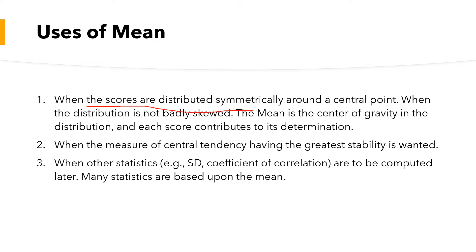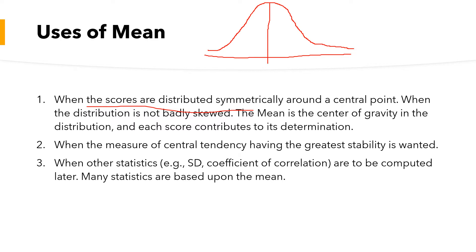First, the uses of mean: we use mean when scores are distributed symmetrically around the central point and when the distribution is not badly skewed. Whenever we use a frequency distribution, we make a graphical representation using a bar graph or line graph. When we take data from an entire population or large sample, we get a distribution that is generally considered a normal distribution — a symmetrical distribution around the midpoint.